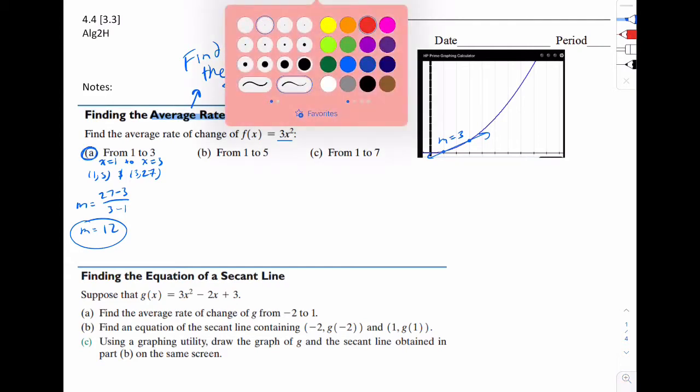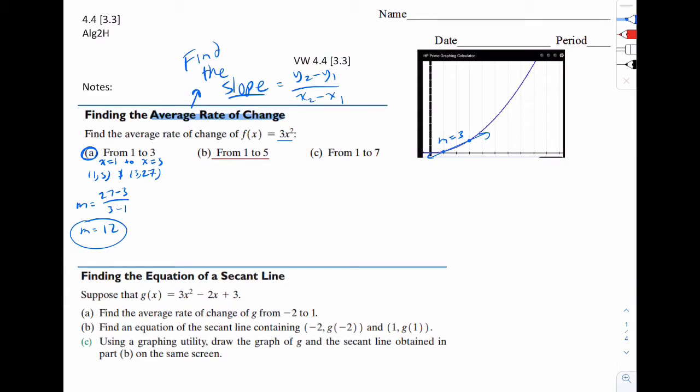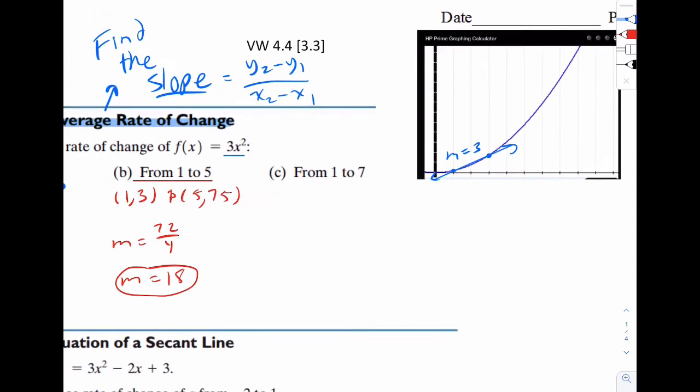We'll do the next one in red from 1 to 5. That would be 1 comma 3 and 5 comma 75. So m is going to be 72 over 4, so the slope should be 18. Let's draw it. We're anchoring the point from 1 to 5. Notice how the slope is getting steeper, so we should expect a higher number. This one is going to be 18.